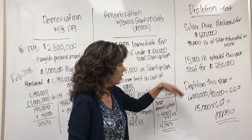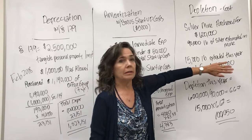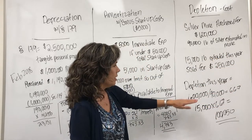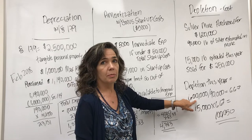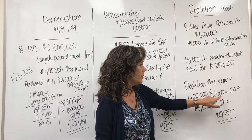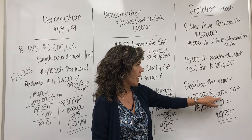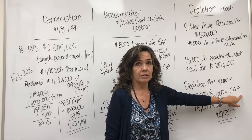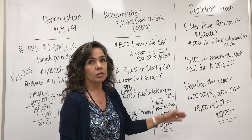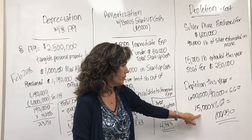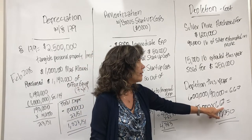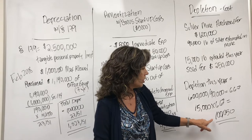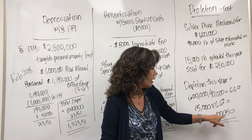Basically, what you sold it for doesn't really matter. You're going to take your purchase cost of the mine and divide it by what you expected to extract — you get a rate of 6.67% in this case. Then multiply that by how many pounds you extracted in the current year, 15,000 pounds, and you get your depletion cost for the year: $100,050.